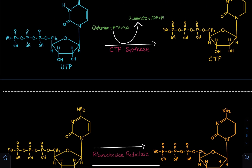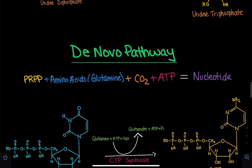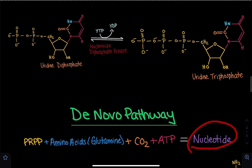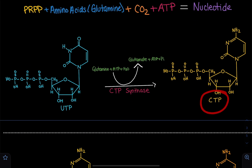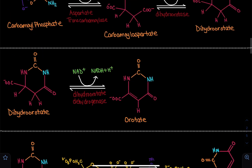This is the de novo pathway of generating CTP and DCTP. Remember that in the de novo pathway, we utilize PRPP, amino acids, CO2, and ATP to create a nucleotide — we create UTP — and from UTP, we can create CTP and DCTP. This is the de novo pathway for creating CTP and DCTP.